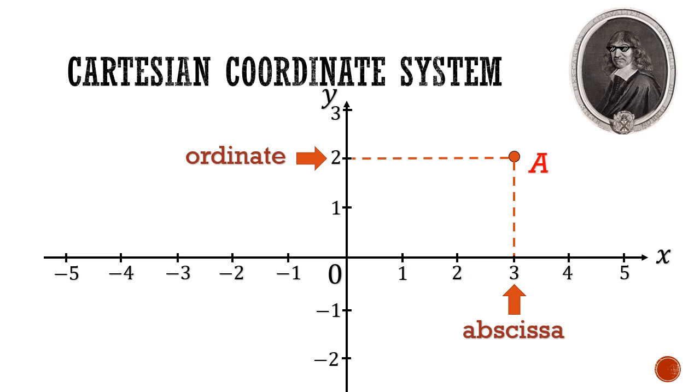Therefore, this coordinate of point A can be labelled as (3, 2) and we place them in brackets.